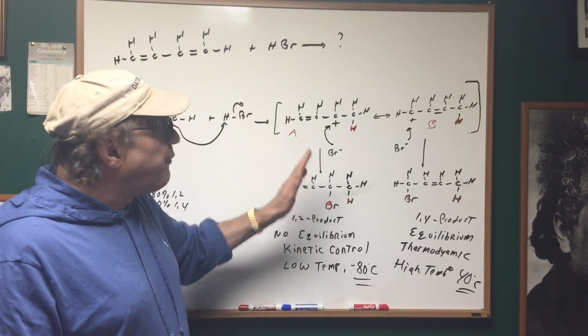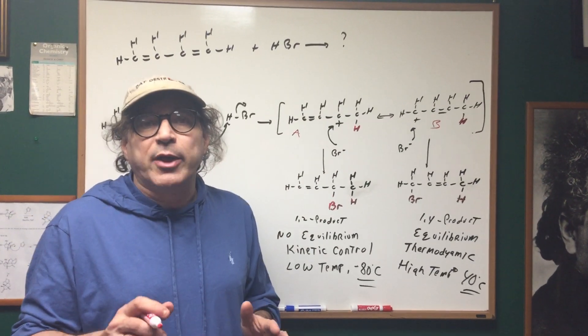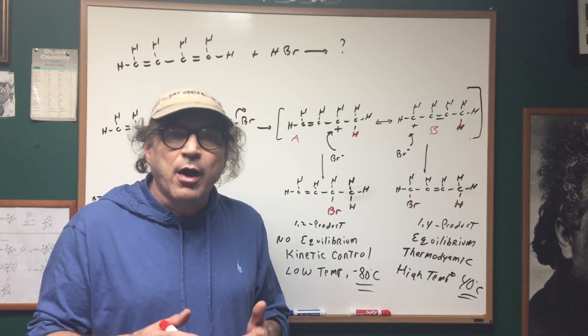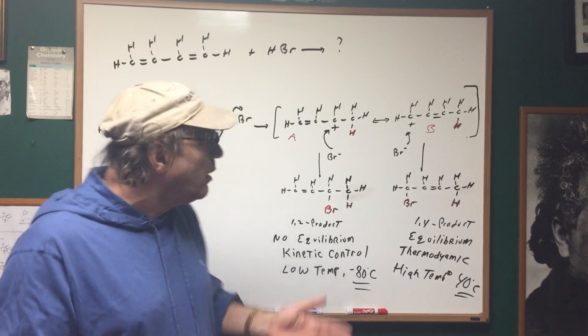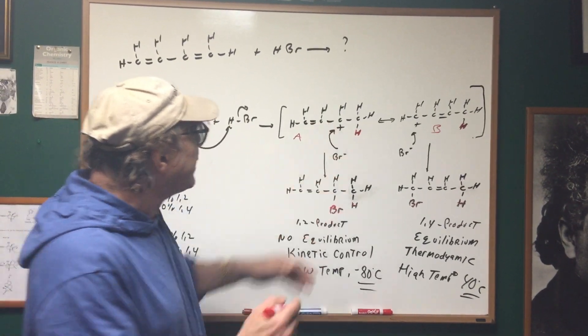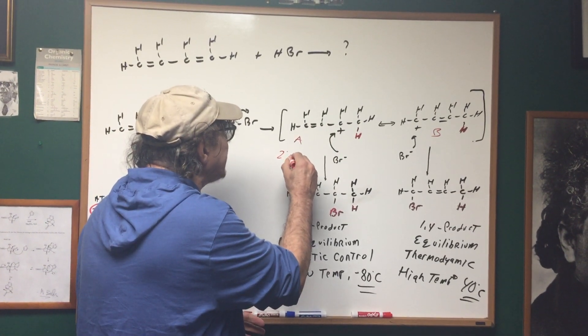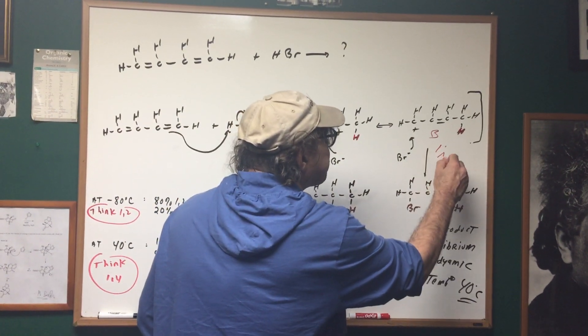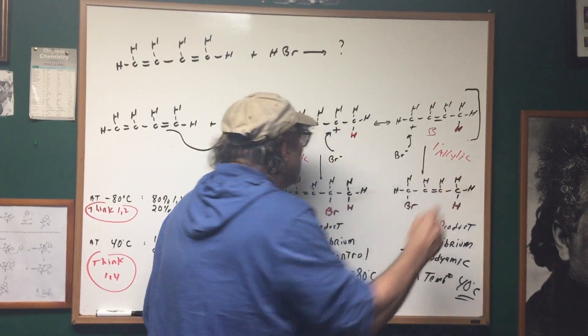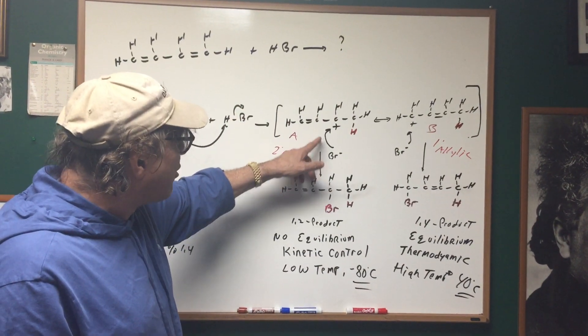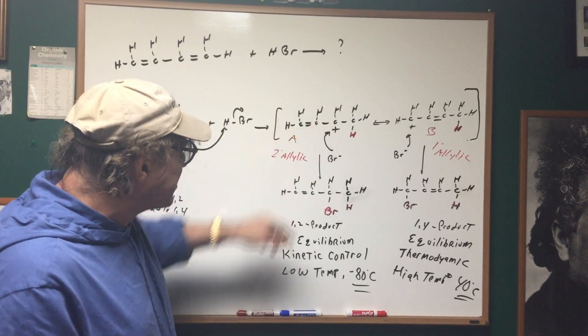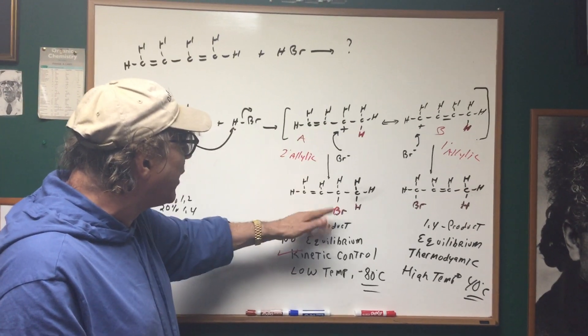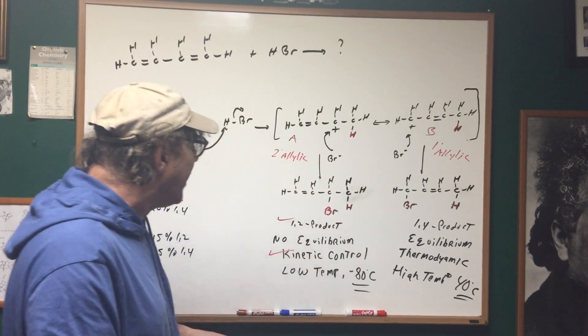Now the faster reaction is what we call under kinetic control, and the faster reaction will be the formation of the more stable carbocation. As you can see, clearly this is a secondary allylic carbocation and this would only be a primary allylic. So as you can see, attack on the secondary allylic, which is fast, which is under what we call kinetic control, we form the best carbocation and we form our 1,2 product.